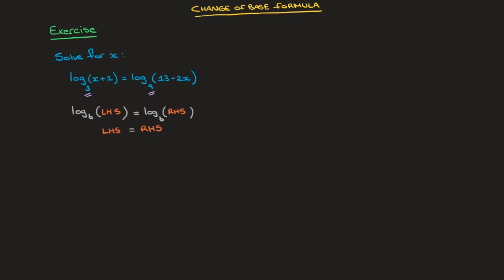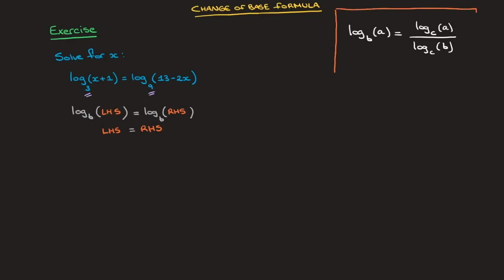Now, going back to this equation, the first thing we need to do is make sure that both sides are written as logarithms of the same base, and for that we use the change of base formula. The formula states that given log base B of a number A, we can write this in terms of another base C using the fact that it equals log base C of A over log base C of B. I'll go ahead and box that formula — do make a note of it. This is the change of base formula for logarithms.